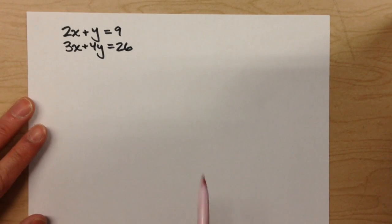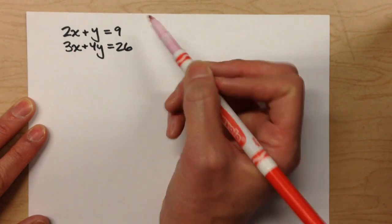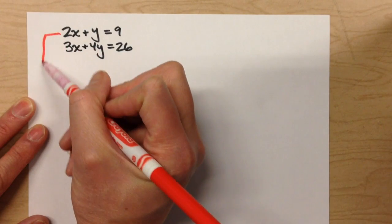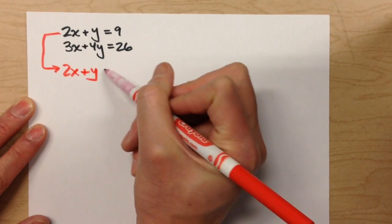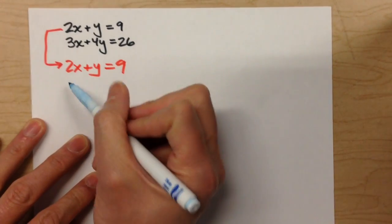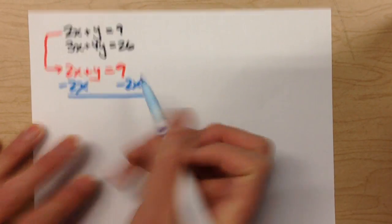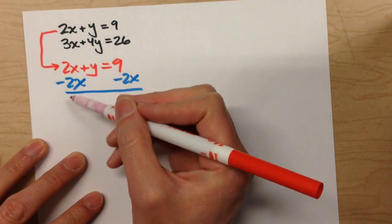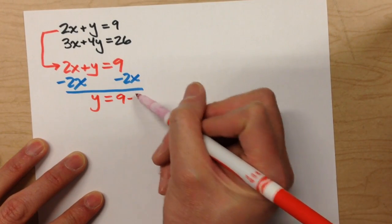So what we're going to do is make that situation happen. I can take this equation right there, 2x plus y equals 9, and get y by itself on one side of the equal sign. I'll minus 2x on both sides, 2x cancels out, so y drops down, equals drops down, and I get 9 minus 2x.